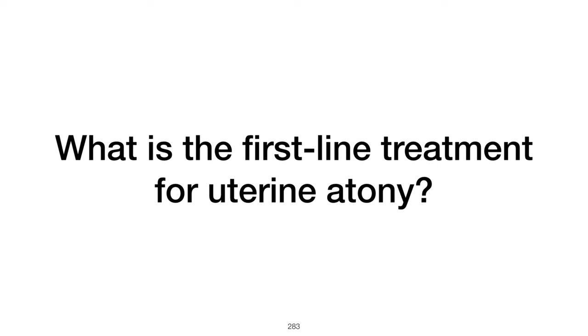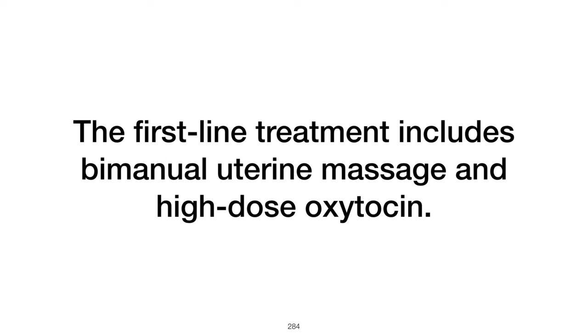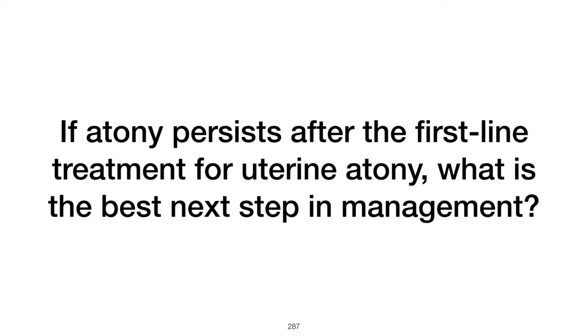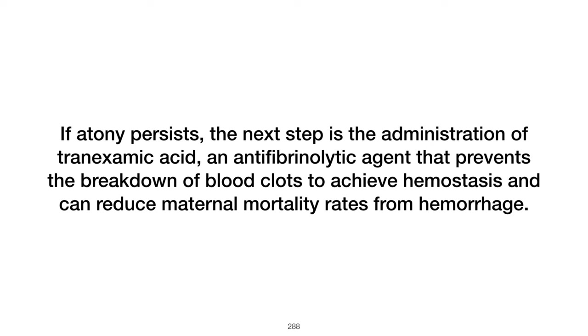What is the first-line treatment for uterine atony? The first-line treatment involves bimanual uterine massage and administration of high-dose oxytocin to stimulate uterine contractions and reduce bleeding. Characteristics virtually pathognomonic for homocystinuria include fair hair and eyes, developmental delay, and a history of cerebrovascular accidents. If uterine atony persists despite initial measures, additional medications such as tranexamic acid, misoprostol, and other uterotonic agents may be indicated.